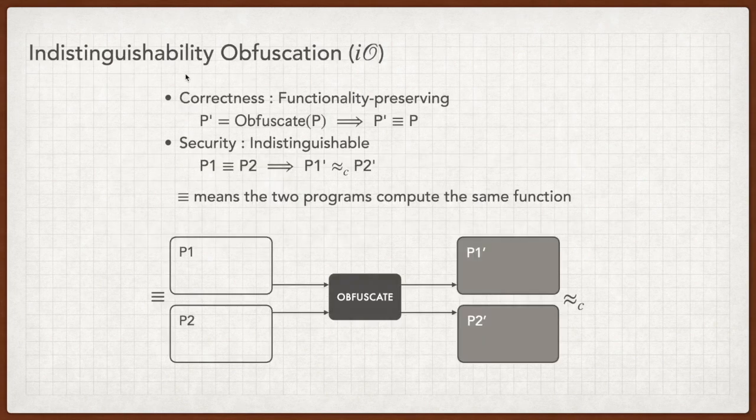Let's start by talking about indistinguishability obfuscation. IO is a compiler whose input is a program P. It outputs a program P prime which computes the same function as P. Moreover, if we have two functionally equivalent programs P1 and P2, P1 prime and P2 prime are computationally indistinguishable.